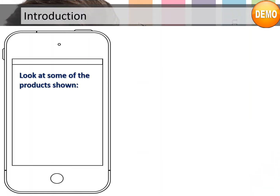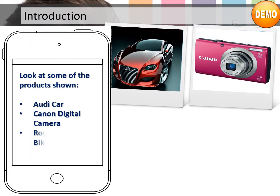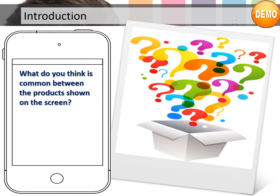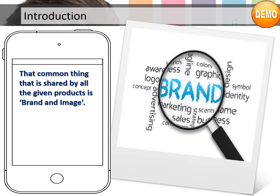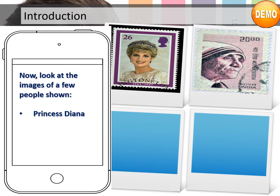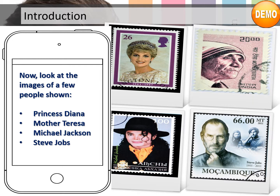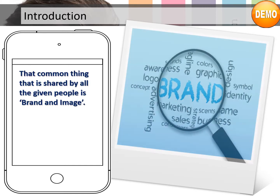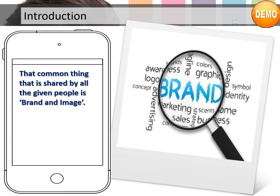Look at some of the products shown: Audi car, Canon digital camera, Royal Enfield bike, Rolex wristwatch. What do you think is common between these products? The common thing shared by all the given products is brand and image. Now look at the images of a few people shown: Princess Diana, Mother Teresa, Michael Jackson, Steve Jobs. The common thing shared by all these people is also brand and image.